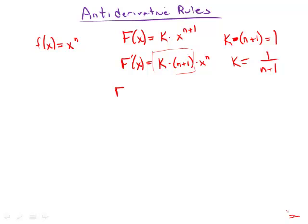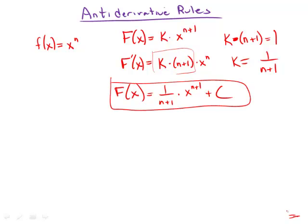This means that the general antiderivative of x to the n would be 1 over n plus 1 times x to the n plus 1. And of course plus C.